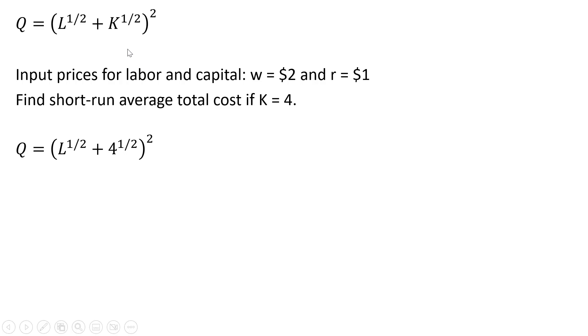The first thing we'll do is for K, we're going to plug in 4, and then take the square root of that, and we get this result. Now I want to solve this production function, this short run production function, for L units of labor.